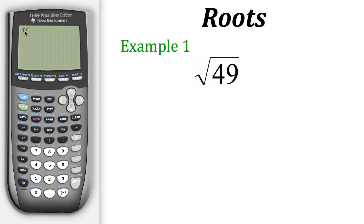So now as you can see up here, we have square root and then a parenthesis. So now we just need to fill in the number that we have in the square root. For us, we have 49. And now that that's all we have in the square root, we'll close the parenthesis. So now if we want to find out what the square root of 49 is, we just need to hit Enter. And as we can see, that's 7.